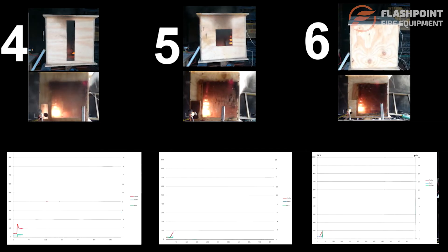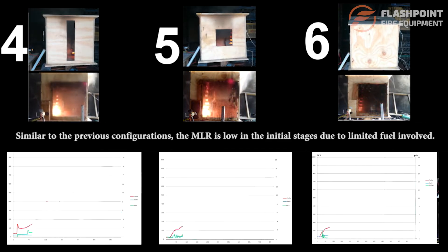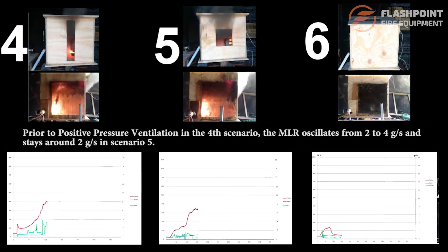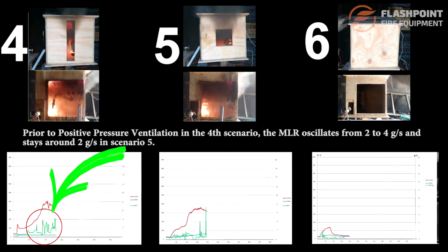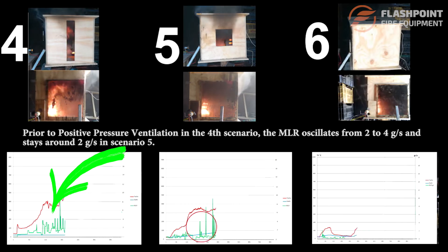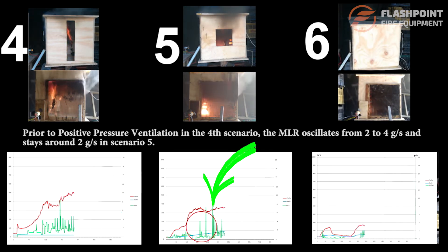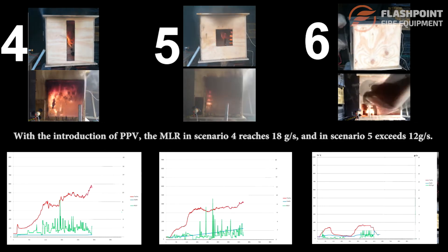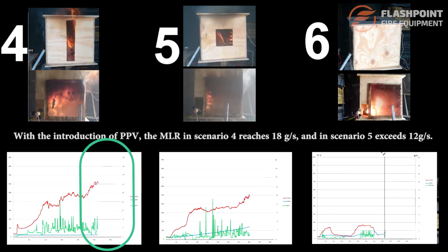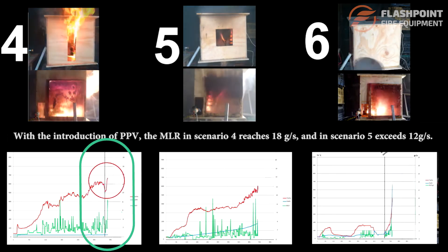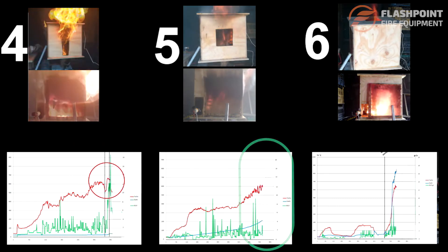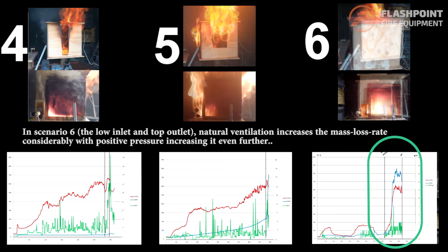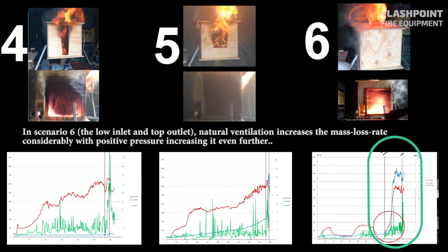Comparing the second series of test configurations, we find similar results at the initial stages as the mass loss rate is limited by the small amount of fuel involved. Prior to the introduction of positive pressure ventilation, the mass loss rate in scenario 4, the vertical opening, oscillates between 2 to 4 grams per second and hovers around 2 grams per second in scenario 5. With the introduction of positive pressure ventilation, the mass loss rate in scenario 4 reaches 18 grams per second and in scenario 5 exceeds 12 grams per second. In scenario 6, the low inlet and top outlet, natural ventilation increases the mass loss rate considerably, with positive pressure increasing it even further.